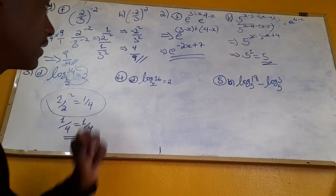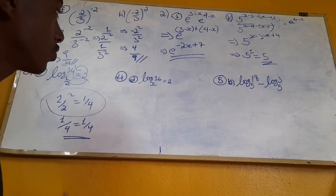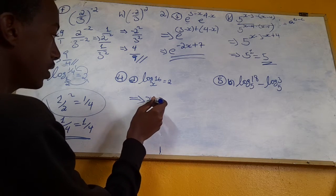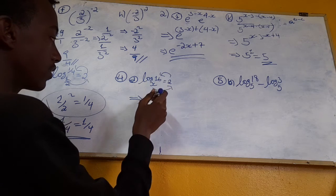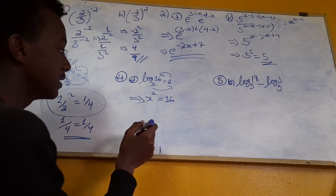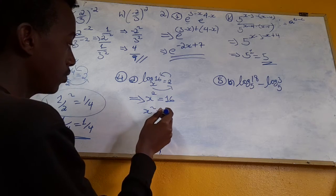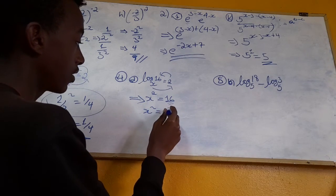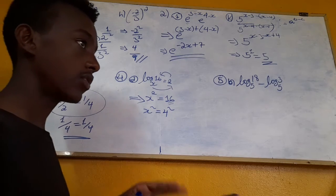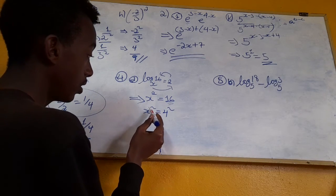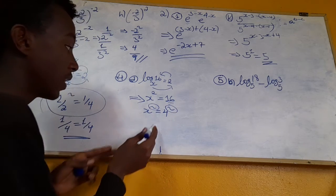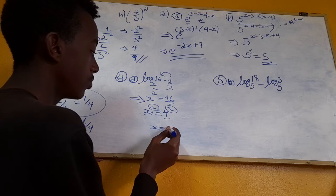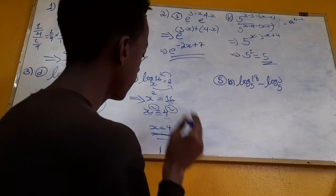Log 16 to the base x is equal to 2. This means x squared is equal to 16. So x squared equals 16, meaning x equals 4, because 4 squared is 4 times 4 which equals 16. Therefore the exponent 2 gives base x equal to 4.